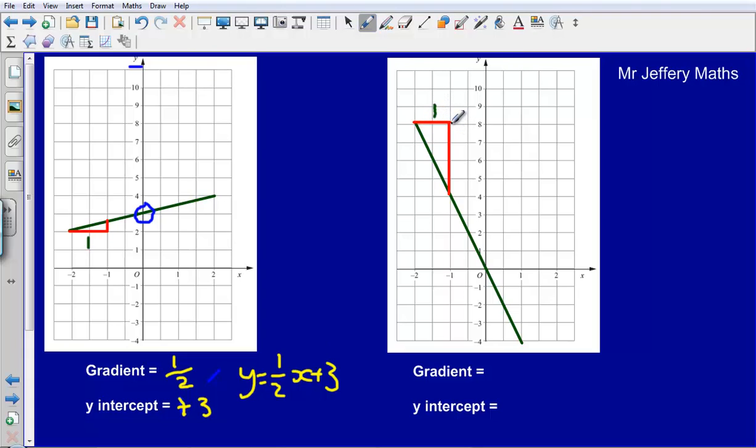How far down have we moved? Well we've gone from eight, seven, six, five to four. So we've gone down by four. So we would say that the gradient for this one here is going to be negative four.